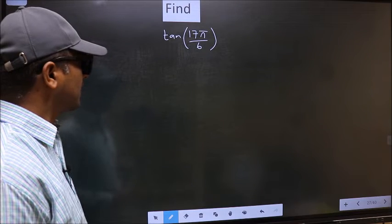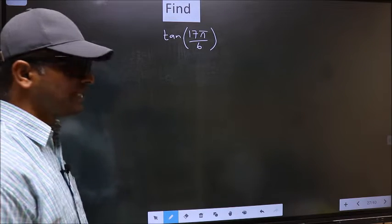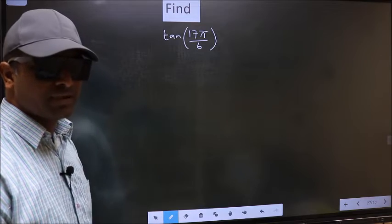Find tan 17π by 6. To find this, we should follow this method.